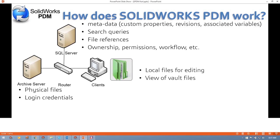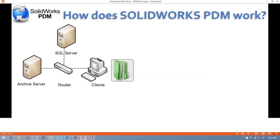So what happens once you actually want to open and edit a file? Let's take a look at an example. When I'm ready to open a file, the first thing that'll happen is my machine will ping the SQL Server. The SQL Server will give me all sorts of information about that file — for instance, the associated metadata and what permissions I have.